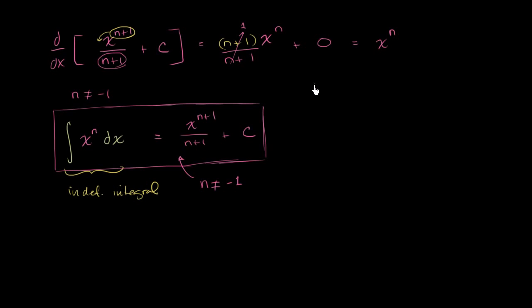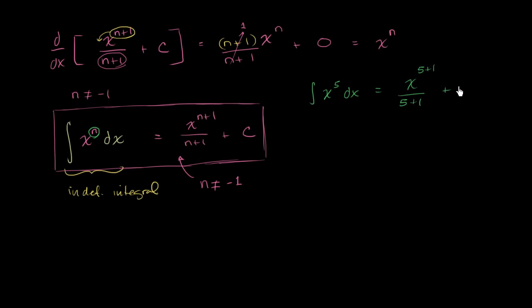Let's take the antiderivative of x to the fifth power. The 5 is equal to n. We increment the exponent by 1, giving x to the 5 plus 1, and divide by that same value, 5 plus 1. We include c to capture all possible antiderivatives. So this equals x to the sixth over 6 plus c. You can verify by taking the derivative using the power rule — you get x to the fifth.